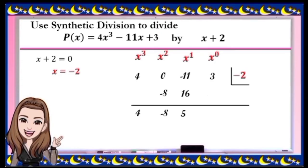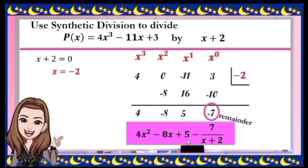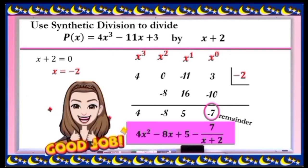Multiply again: 5 and negative 2; the answer is negative 10. Then add again: 3 plus negative 10 is negative 7. So our remainder is negative 7. The dividend is in the third degree and the divisor is in the first degree, so our quotient must be in the second degree. The final answer is 4x² - 8x + 5 - 7/(x + 2). If your answer is correct, then good job!